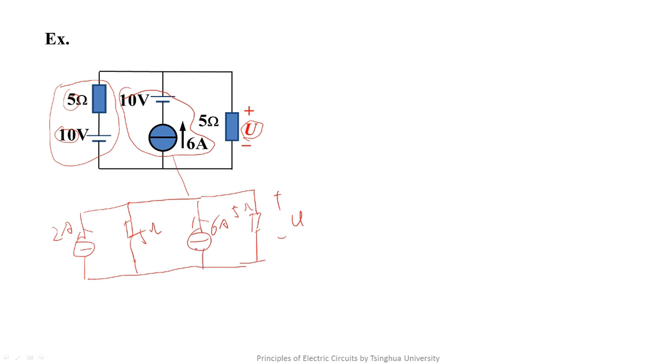Now, we need to solve the circuit. For the circuit, there is a parallel connection of a 2A current source and a 6A current source. They can be equivalent to an 8A current source from outside.